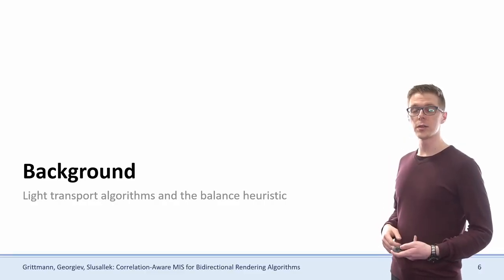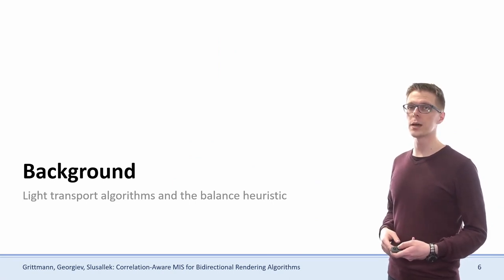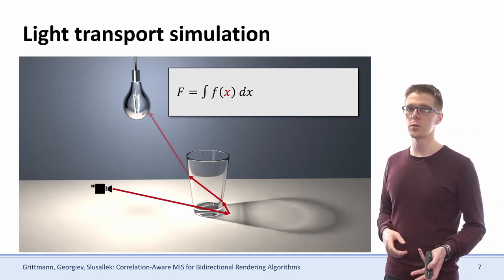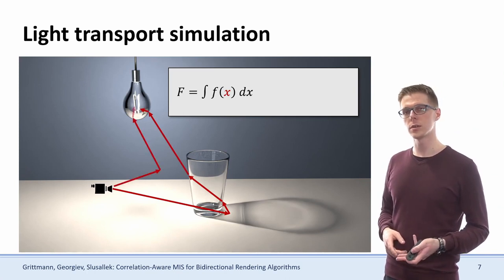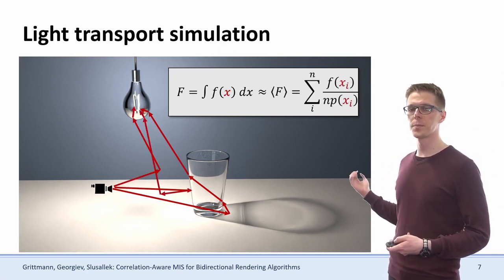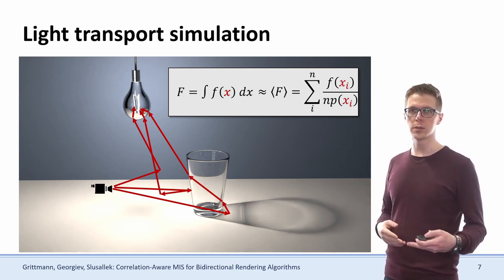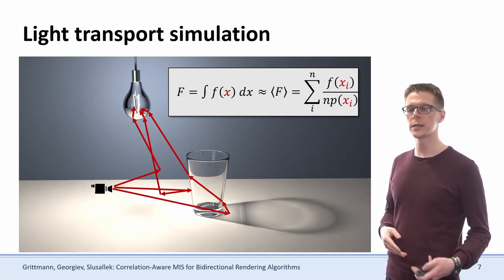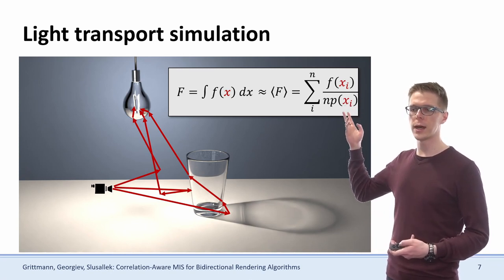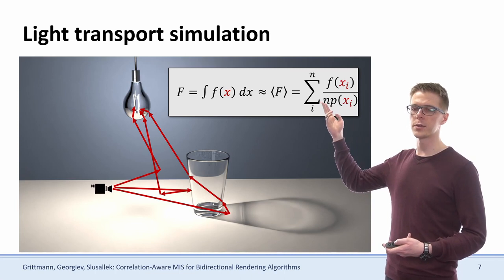Before I can tell you where that noise is coming from and how we get rid of it, we need to recap some background. The goal of light transport simulation is to compute an integral over all possible paths between a camera and a light source. And we can do so by using Monte Carlo, which takes n random samples and sums their contributions divided by the sampling probability and the number of samples.